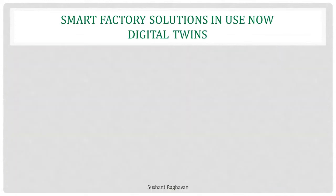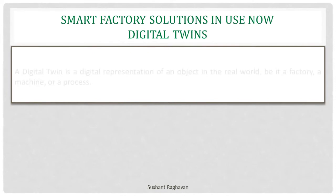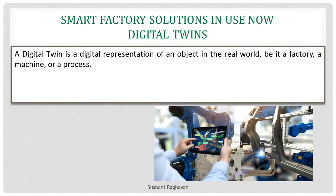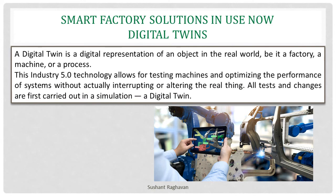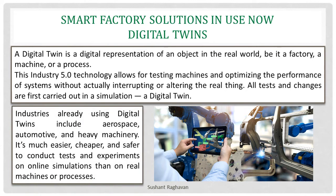One smart factory solution already in use is digital twins. A digital twin is a digital representation of an object in the real world — be it a factory, a machine or a process. This Industry 5.0 technology allows for testing machines and optimizing the performance of systems without actually interpreting or altering the real thing. All tests and changes are first carried out in a simulation, a digital twin. Industries already using digital twins include aerospace, automotive and heavy machinery. It's much easier, cheaper and safer to conduct tests and experiments on online simulations than on real machines.